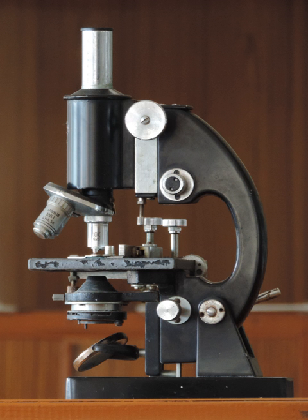The earliest known examples of compound microscopes, which combine an objective lens near the specimen with an eyepiece to view a real image, appeared in Europe around 1620. The inventor is unknown, although many claims have been made over the years.